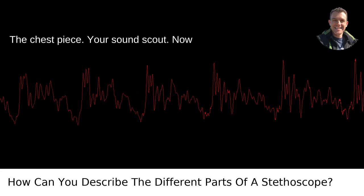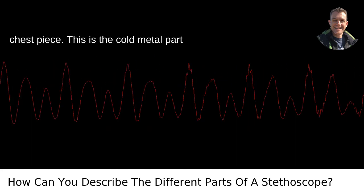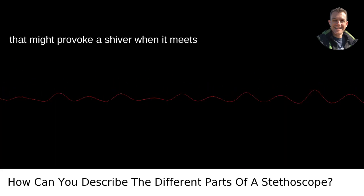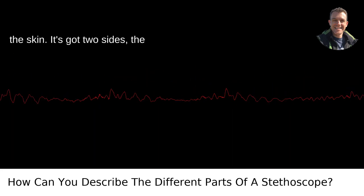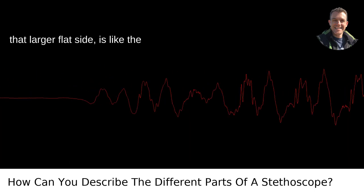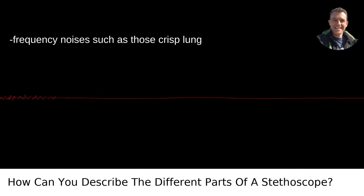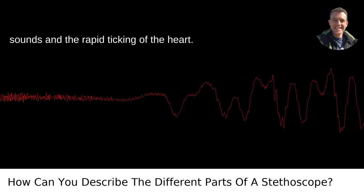The chest piece, your sound scout. Now let's talk about the business end, the chest piece. This is the cold metal part that might provoke a shiver when it meets the skin. It's got two sides, the diaphragm and the bell. The diaphragm, that larger flat side, is like the stethoscope's drum, picking up high-frequency noises such as those crisp lung sounds and the rapid ticking of the heart.